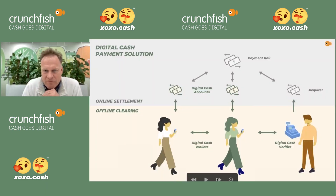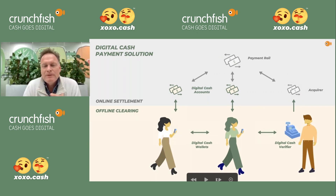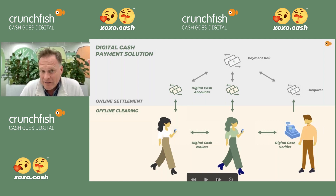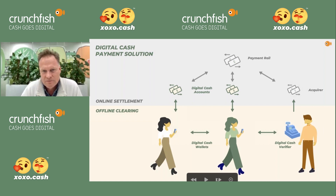We started questioning this and came up with a solution for truly offline payments — neither the payer nor the receiver is online. That is one of the key aspects for CBDC, because physical cash is all about offline. Our digital cash payment solution is built around a two-tier, two-stage payment process: first an offline clearing, then an online settlement where we move money between accounts.